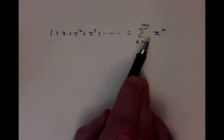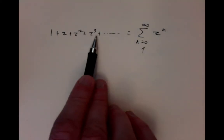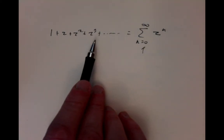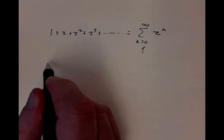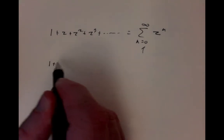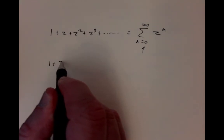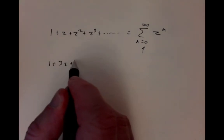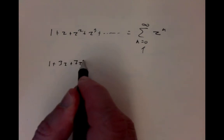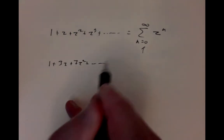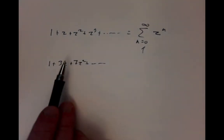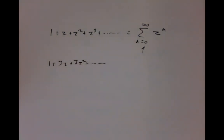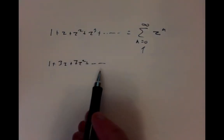The coefficients don't always have to be just ones. We could have more complicated power series, something like 1 plus 3z plus 7z squared plus dot dot dot, with some complicated choices of coefficients at each step.